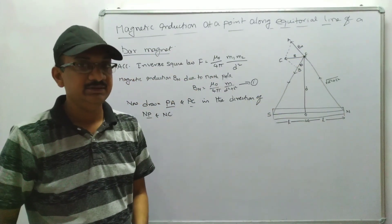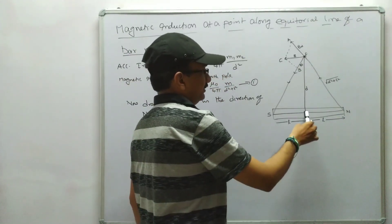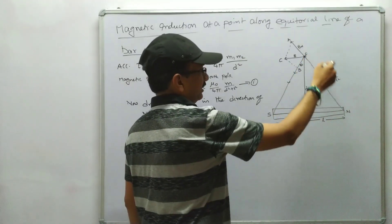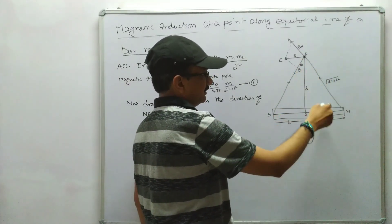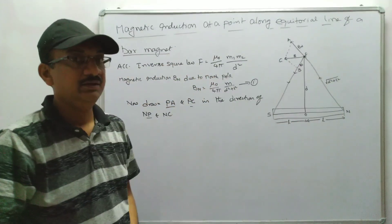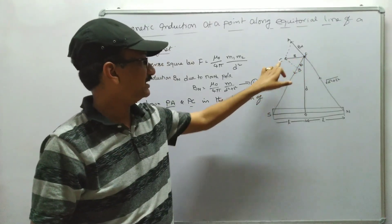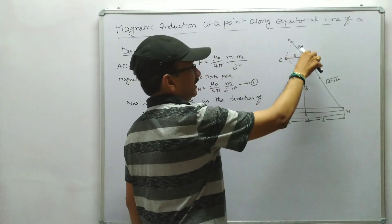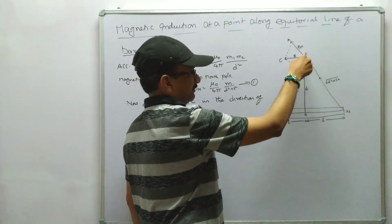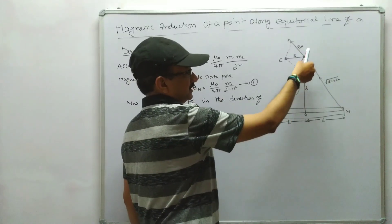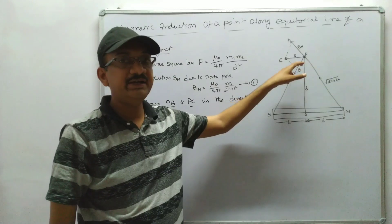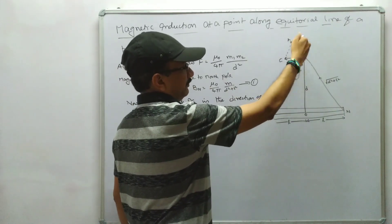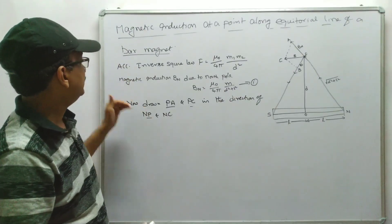The length of the magnet is 2L and the distance from the midpoint origin to point P is small d. If we consider the triangle formed, the hypotenuse will be the square root of d² + L². We now need to find the resultant PC, because the north pole gives BN — the magnetic induction due to the north pole — and the south pole gives BS — the magnetic induction due to the south pole acting at P.